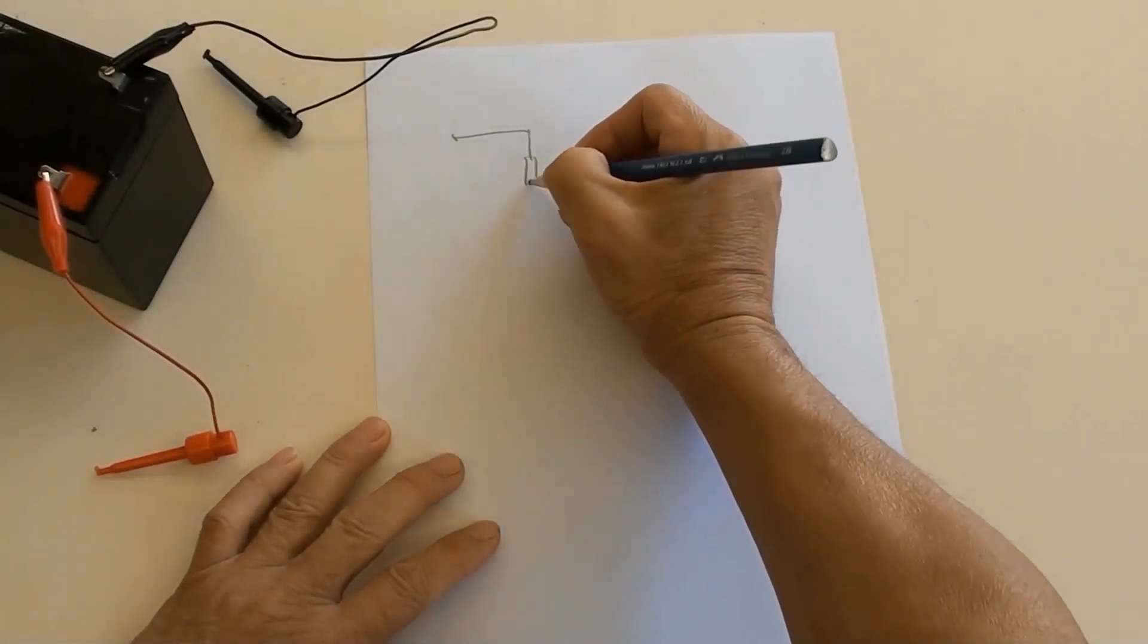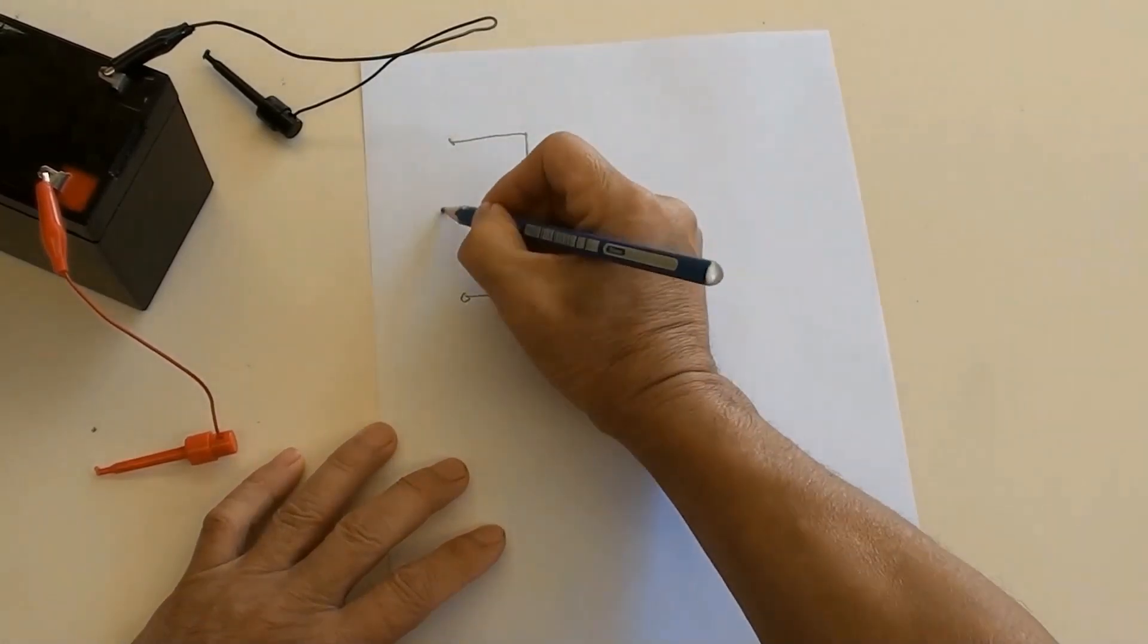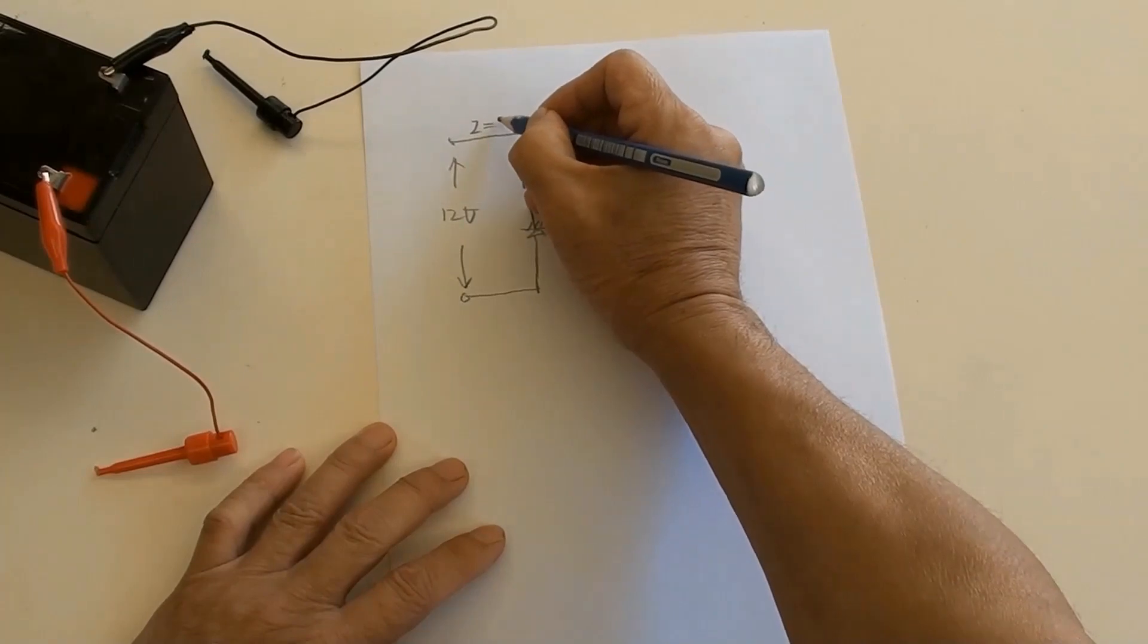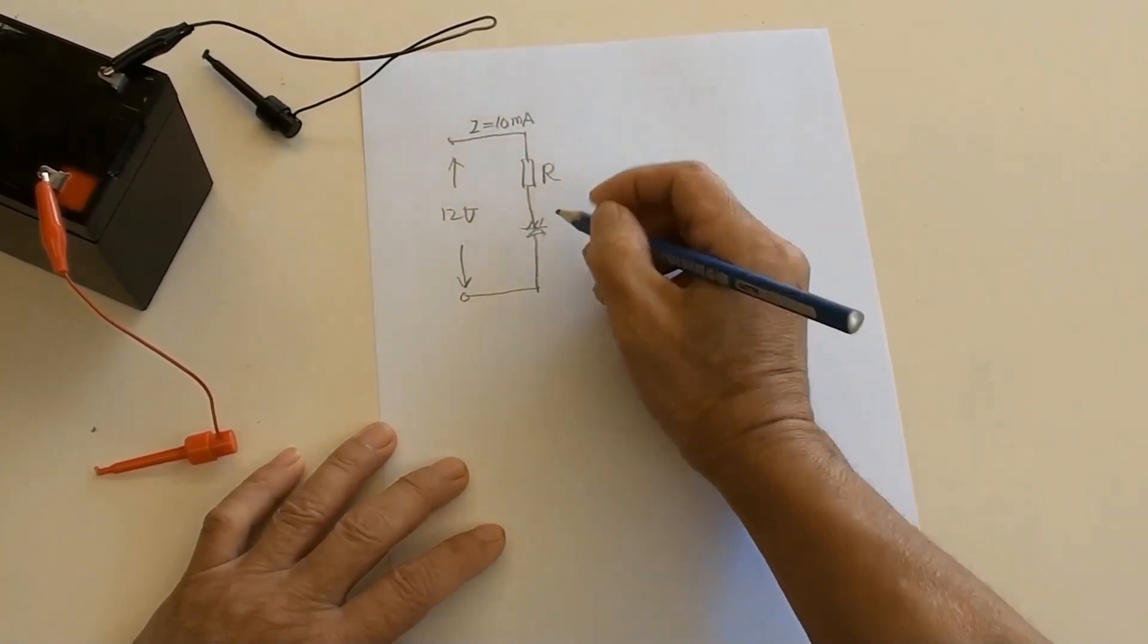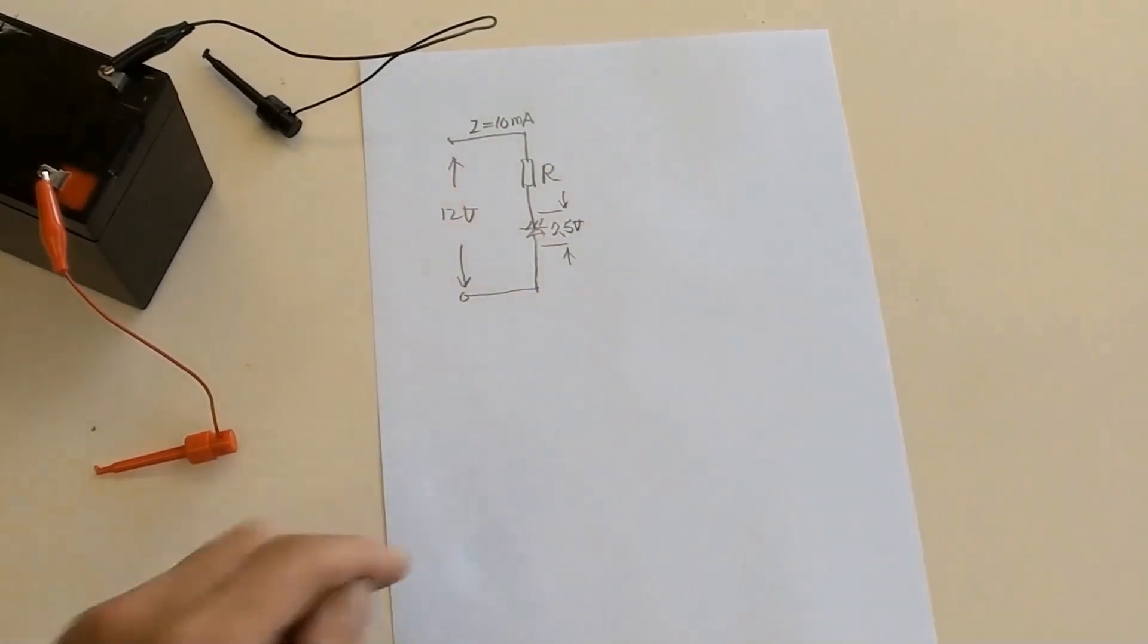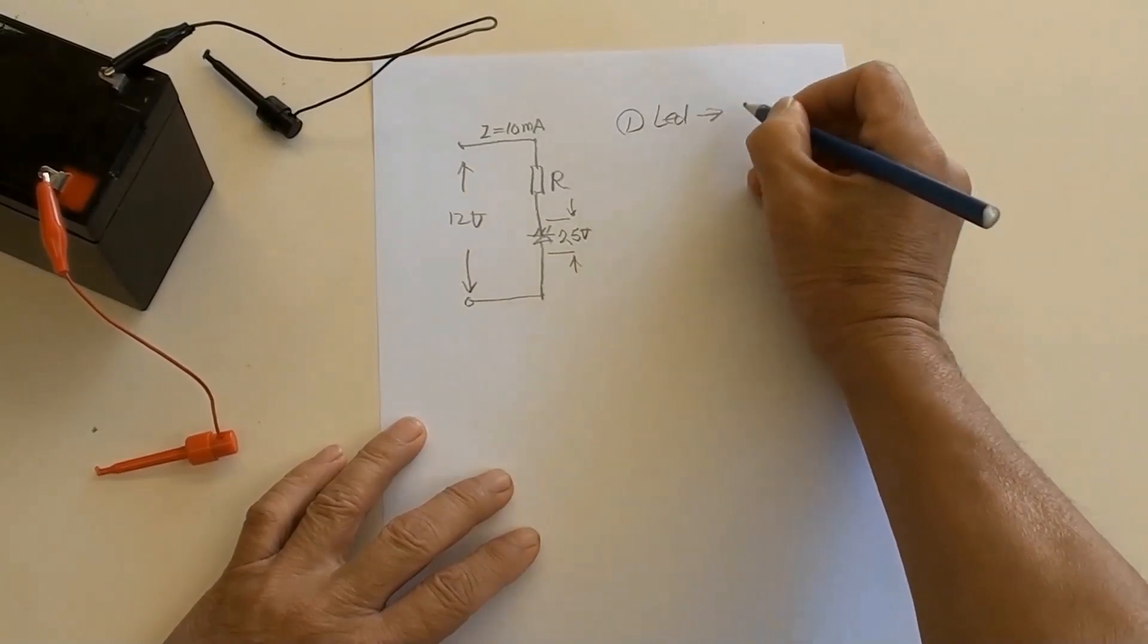As an example I am drawing an LED circuit with a resistor and a battery. Let's make this circuit current 10 milliamperes, a resistor there and followed by a 2.5 volt LED. First, 2.5 volt for the LED has been known.